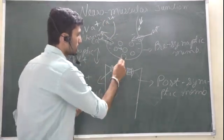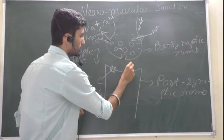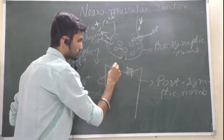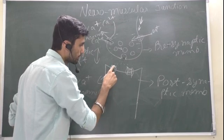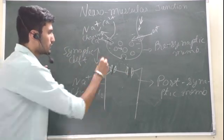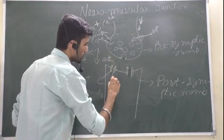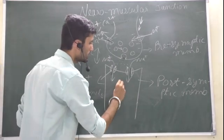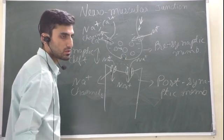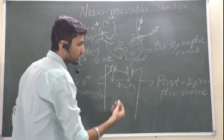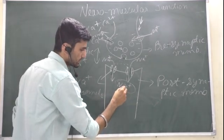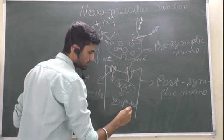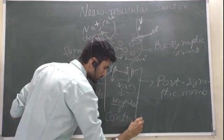After exocytosis, the neurotransmitters get into the cleft and reach the sodium channels on the postsynaptic membrane. When these neurotransmitters bind to the sodium channels, the channels open. Sodium ions present outside the membrane then flow into the muscle fiber membrane. When sodium ions reach the muscle fiber, the muscle fiber generates an impulse, which leads to the contraction of muscle.